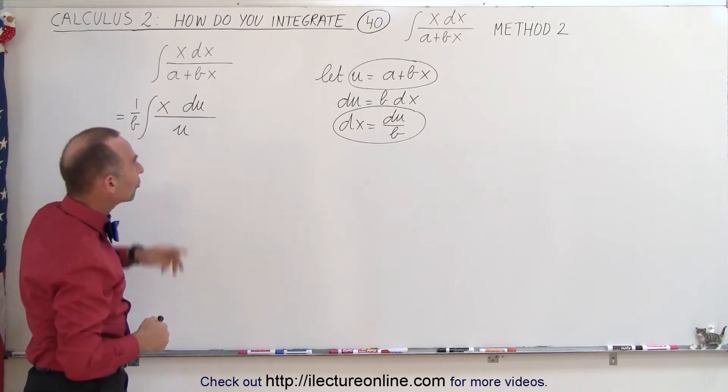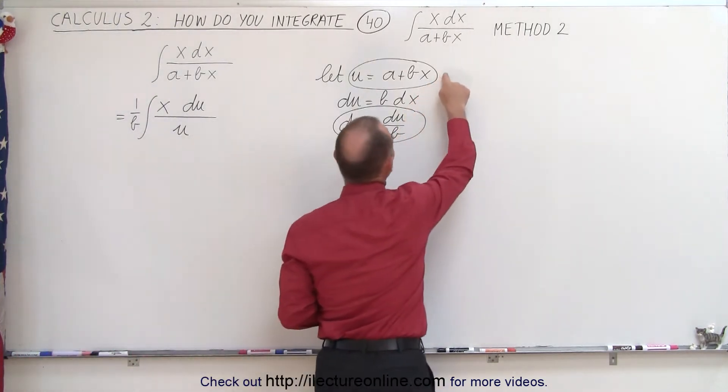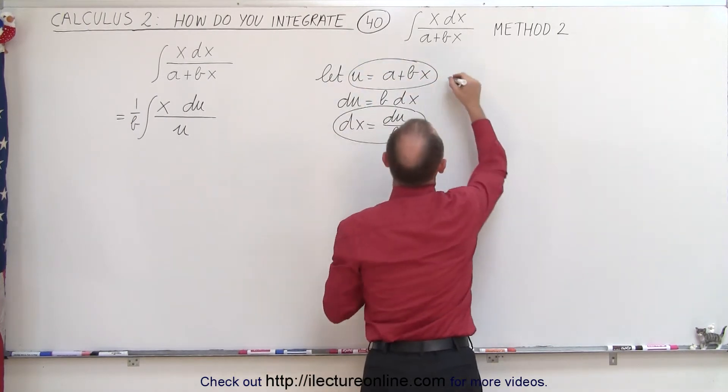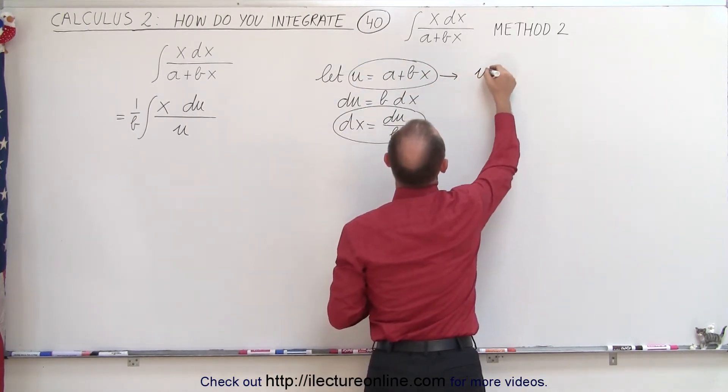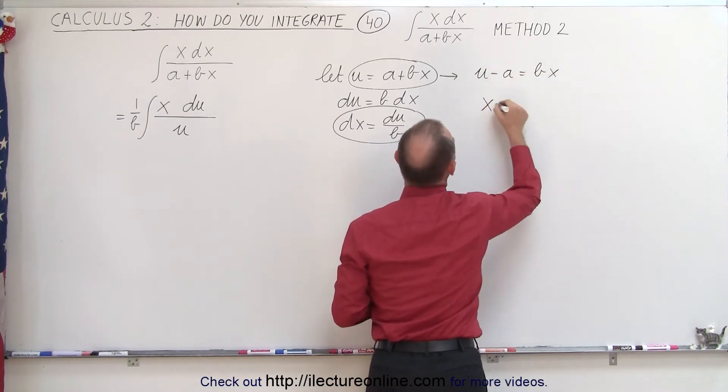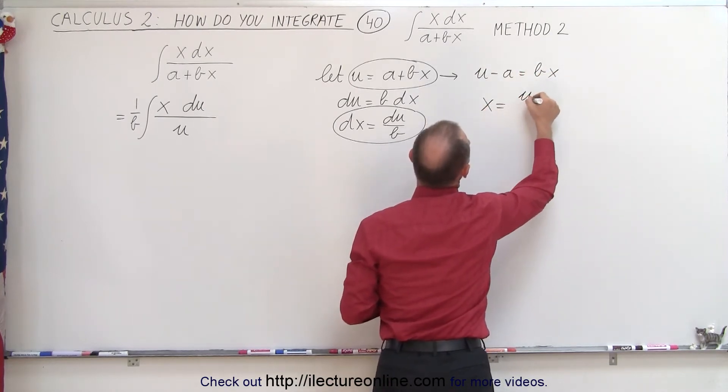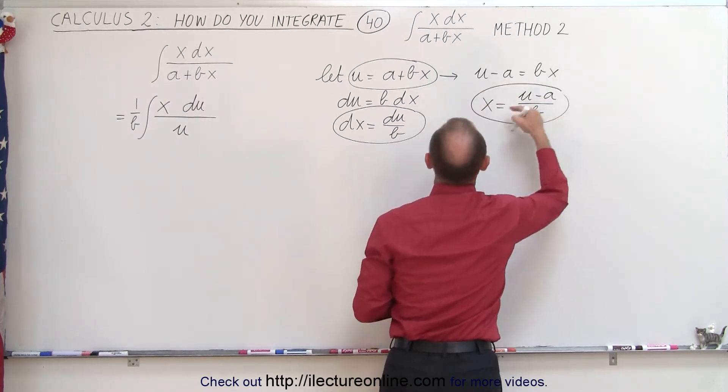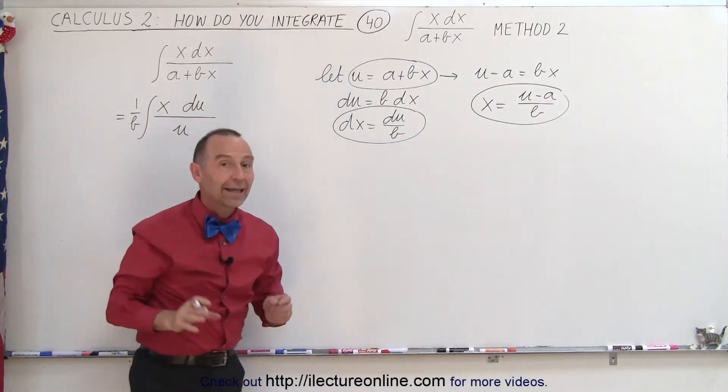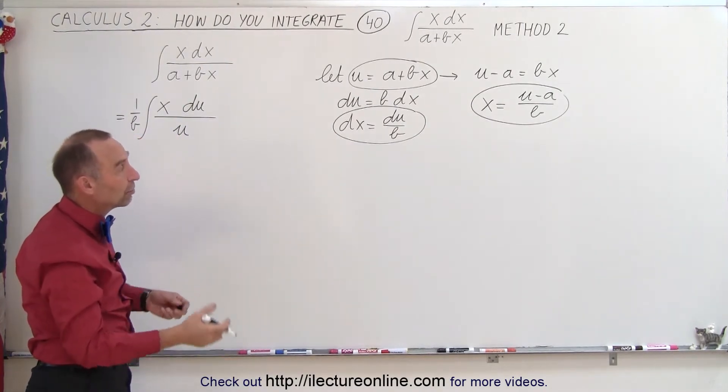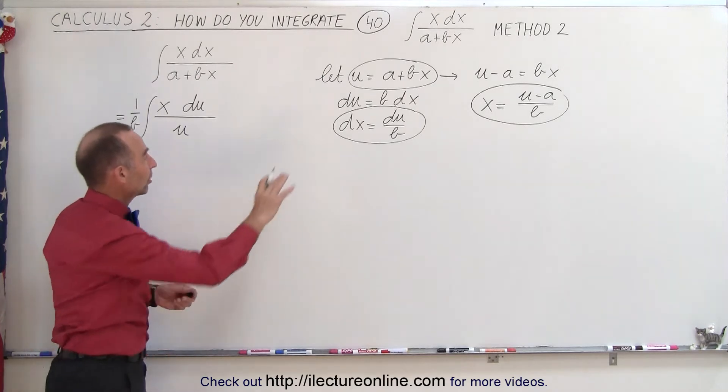Well the way to do that is to go back to this relationship between u and x and solve this for x. So we can say that u minus a is equal to bx or x is equal to u minus a divided by b and substitute this in the integral as well for x. And now what we've done is gotten rid of all the x's and replace them with some sort of relationship to u. So let's do that.